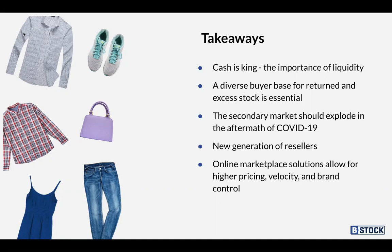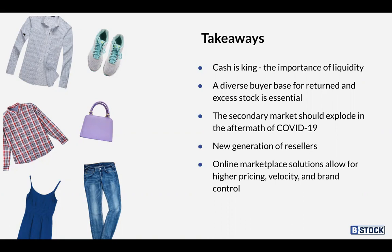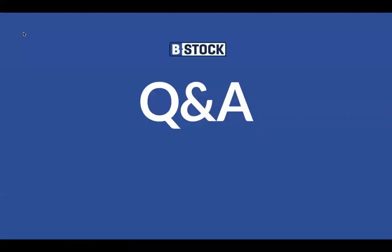What we're seeing now is that there's going to be an explosion within the secondary market, which will create a new generation of resellers that we anticipate will join the B-Stock Solutions ecosystem. We experienced the same pattern in the last financial crash of 2008 and expect the same trends as we move beyond this. Online marketplace solutions allow for higher pricing, velocity, and brand control. Our portfolio of services addresses the needs of apparel retailers to move this excess inventory — this private marketplace solution becomes a strategic asset for both our current and new clients. I'll hand it back to Claire for questions.